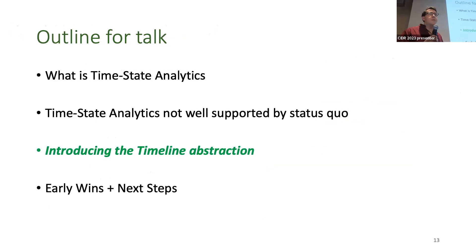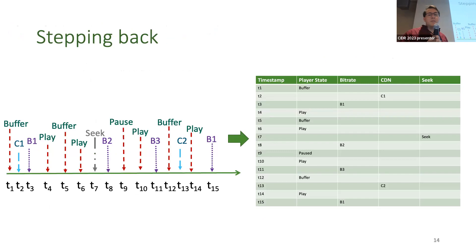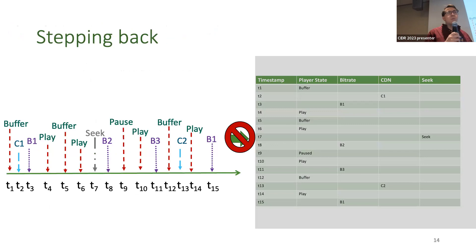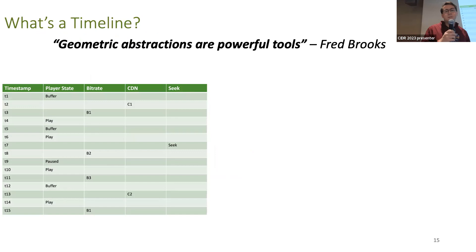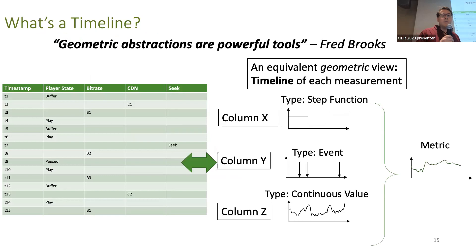Our solution is the timeline abstraction. We started with a sequence of events and tried looking at them as a table — that leap turned out badly for all the processing steps we wanted to do. The timeline abstraction takes inspiration from what we do on a whiteboard to reason about how to compute metrics like this. We'd start by drawing events on a timeline, not going to the table. We take inspiration from Fred Brooks: geometric abstractions are powerful. We view each measurement geometrically — not as a column, but as a curve evolving left to right in a timeline according to its temporal dynamics.